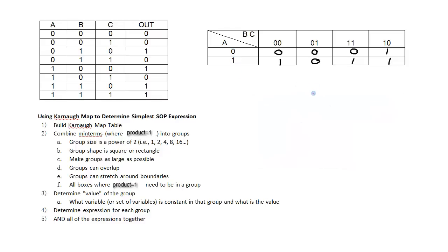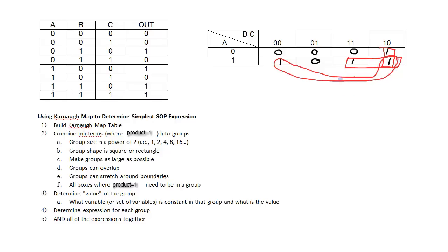The next step is to group the minterms, making sure the group size is a power of 2 and making groups as large as possible. The shape will be a square or rectangle, and groups are allowed to overlap. There's one group of 2 here. Here's another group, and note this box is adjacent to the box on the opposite side. I can't include a third box because that would make a group size of 3, which is not a power of 2.